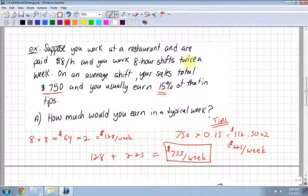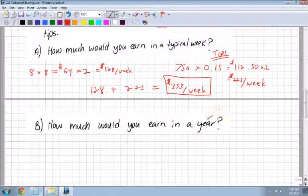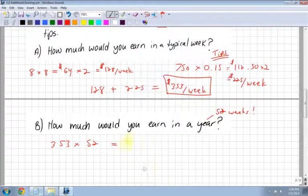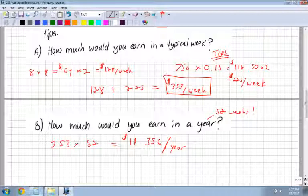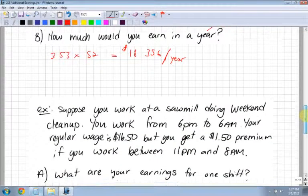Not too bad because you're only working twice a week, only 8-hour shifts, like on a weekend or something. How much would you earn a year? How many weeks in a year? 52 weeks, right? So $353 per week times 52 weeks equals $18,356 per year. If you only work twice a week, which isn't that bad—8 hours a day, your typical workday—you're making $18,356 per year.